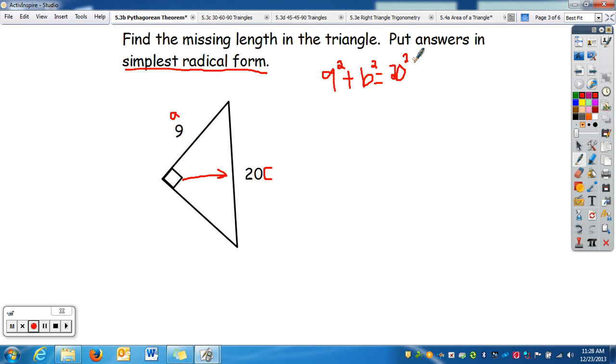So, simplifying that, we have 81 plus b squared equals 20 squared, which is 400. We're going to minus 81. Sorry, I'm having technology issues. Just like that.